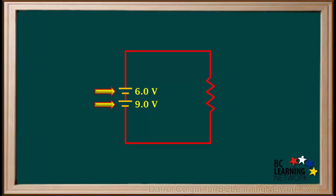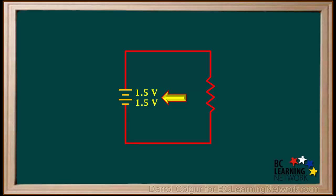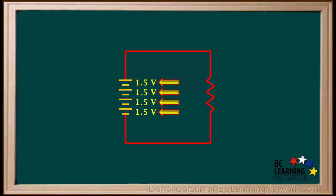We can represent cells in series in a more compact way. We bring the cells together and represent them with alternating short lines for negative terminals and alternating longer lines for positive terminals — positive to negative, to positive, to negative. We can replace the 6 volts and 9 volts with 15 volts for the total battery. A very common voltage for cells is 1.5 volts; two 1.5-volt cells in series give a total of 3 volts, and four 1.5-volt cells in series give a total of 4 times 1.5, which equals 6 volts.